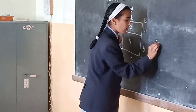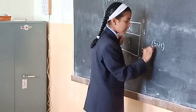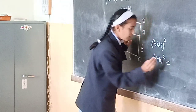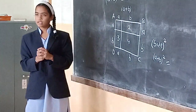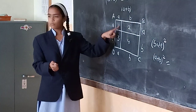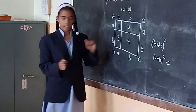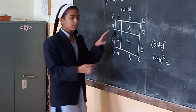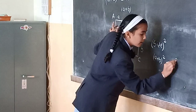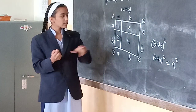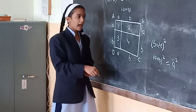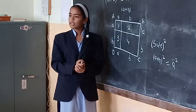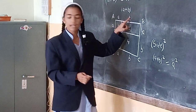We know that the area of a square is equal to side². So (a + b)² gives the area of the original square, which is equal to the sum of the areas of these 4 quadrilaterals. The area of the first quadrilateral, which is in the form of a square, is a × a = a². The second quadrilateral is in the form of a rectangle — its length is b and breadth is a, so length × breadth = a × b = ab.